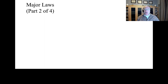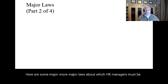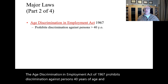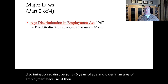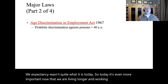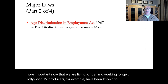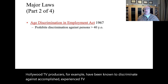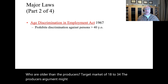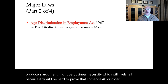Here are some more major laws about which HR managers must be aware. The Age Discrimination in Employment Act of 1967 prohibits discrimination against persons 40 years of age and older in any area of employment because of their age. Today it's even more important now that we are living and working longer. Hollywood TV producers, for example, have been known to discriminate against accomplished, experienced TV writers older than the producer's target market of 18 to 34. The producer's business necessity argument would likely fail because it would be hard to prove that someone 40 or older simply cannot write for a younger audience.